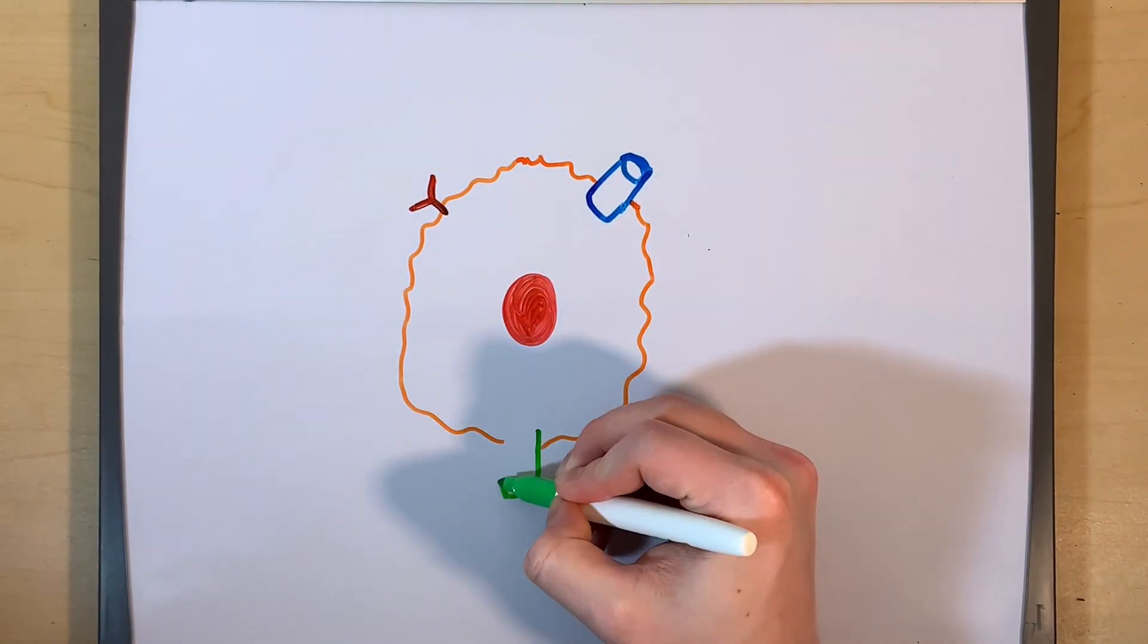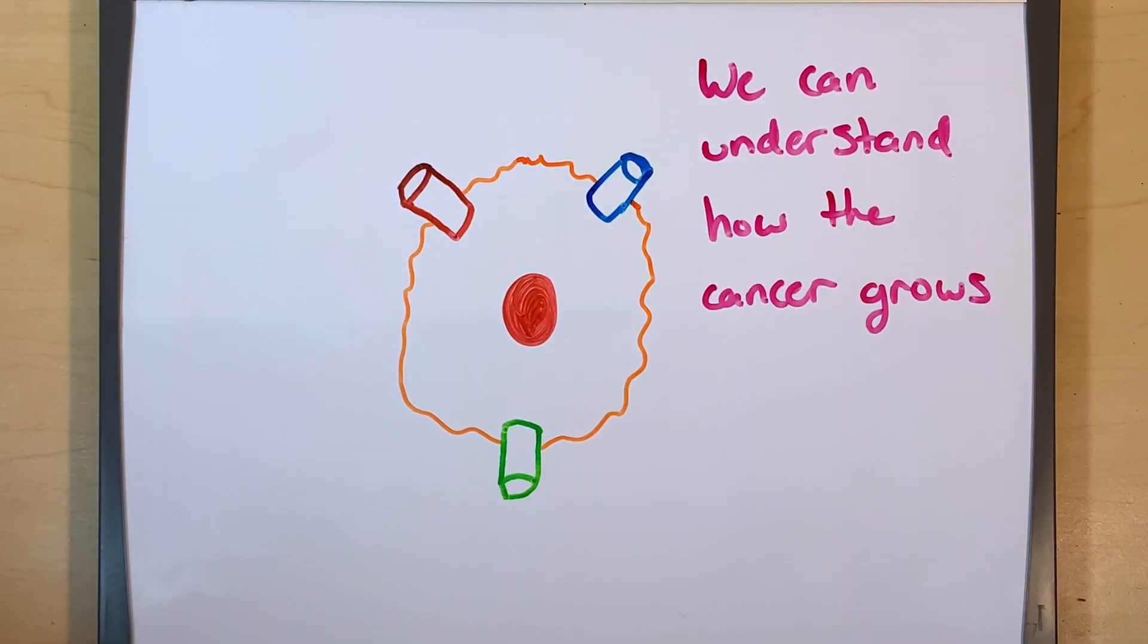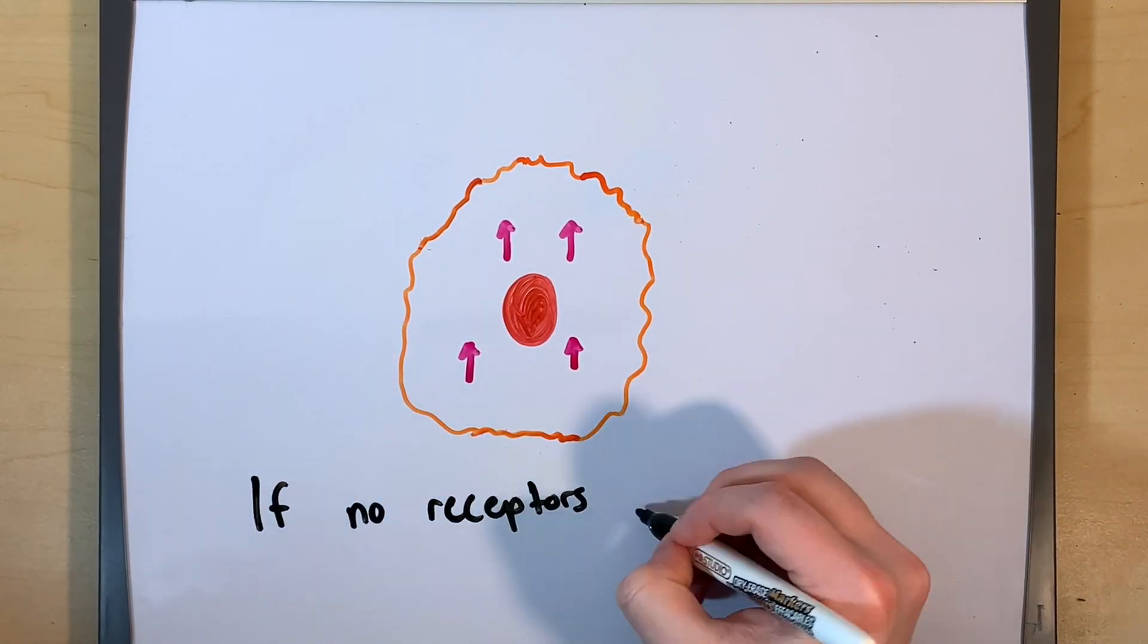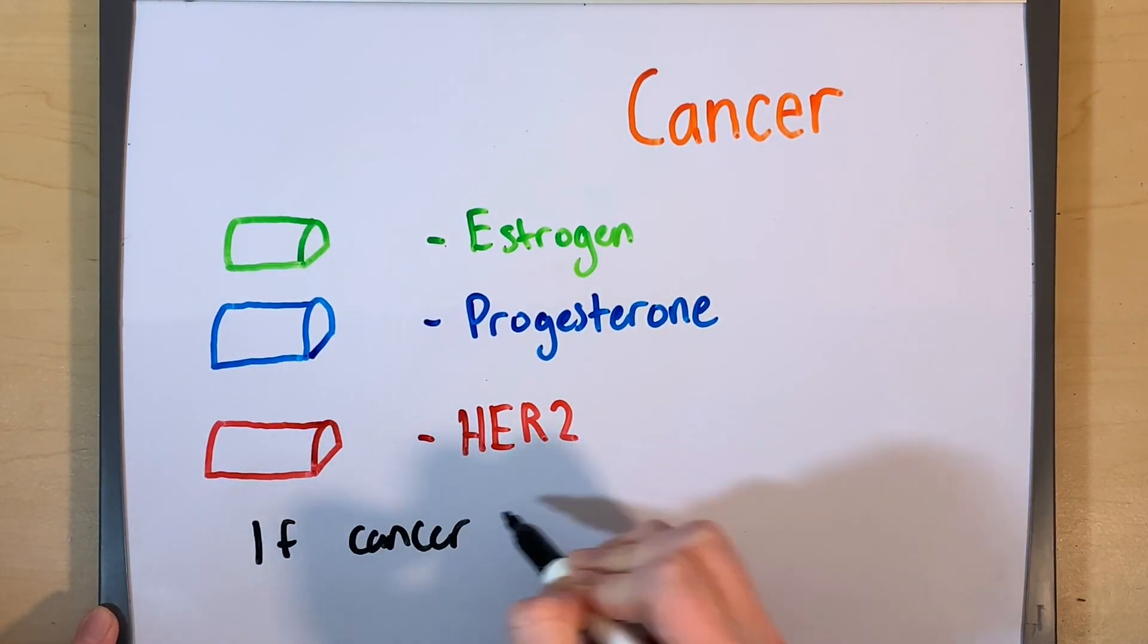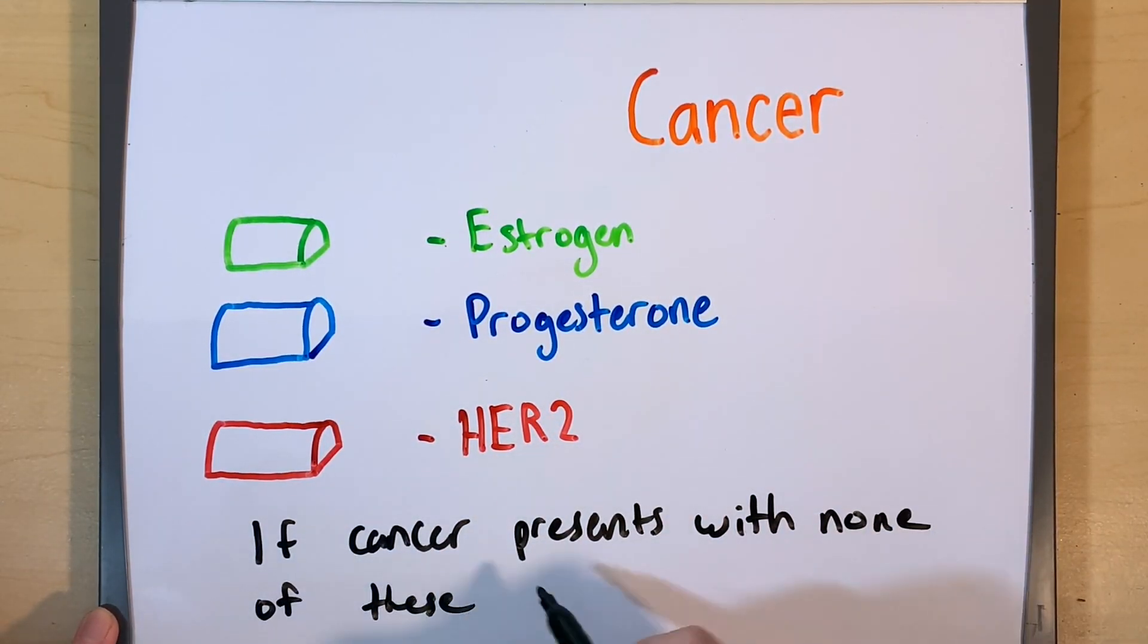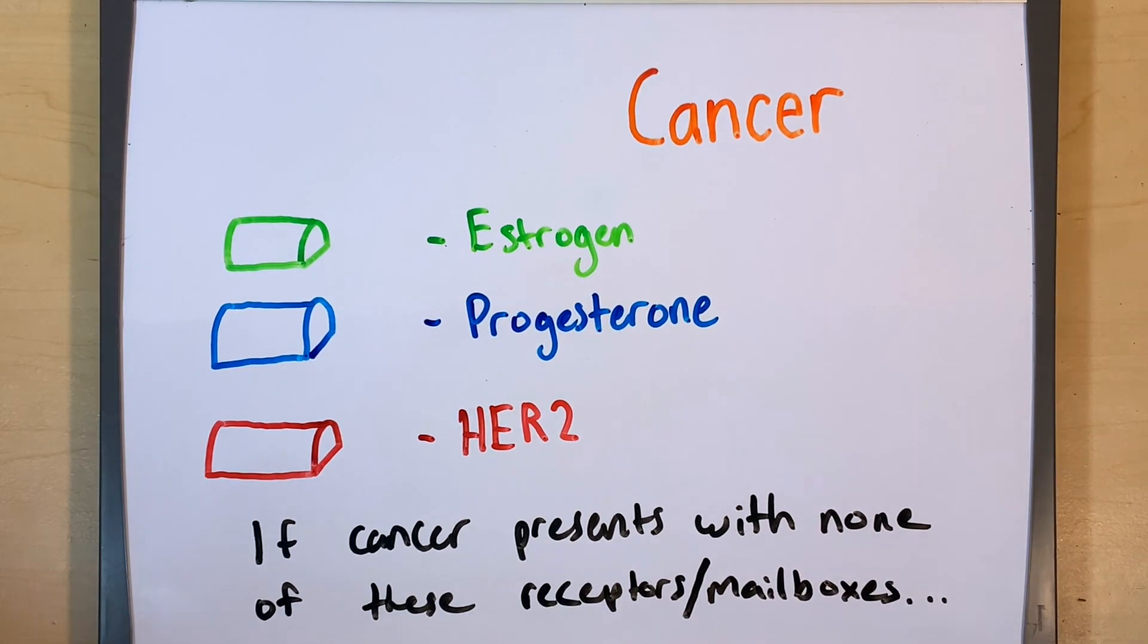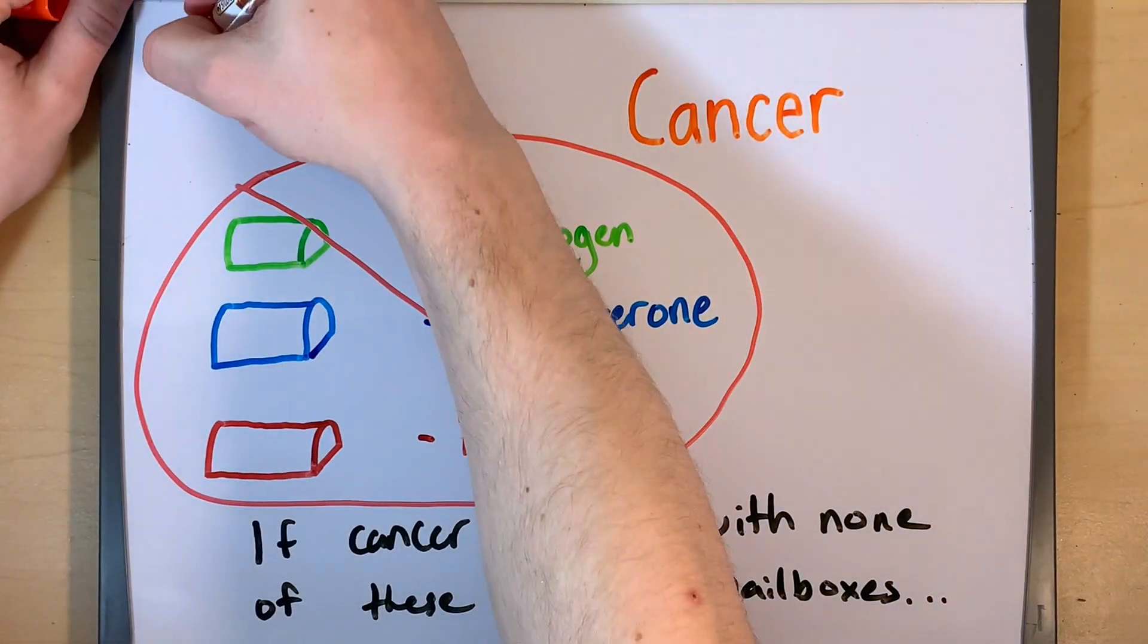Therefore, if a cell has any one of these receptors or mailboxes, we can understand how it grows. But what happens if a cancer cell presents with none of these receptors? If a cancer presents with none of these three receptor mailboxes, it is deemed what's known as triple negative cancer.